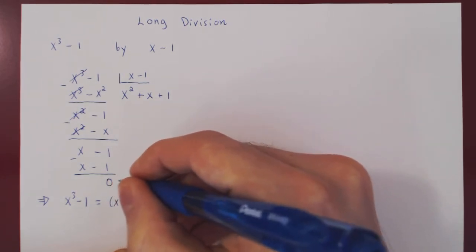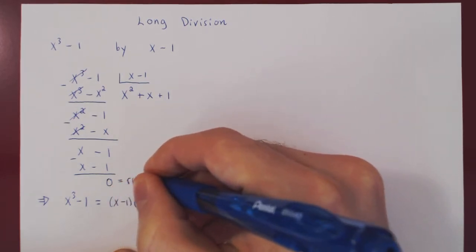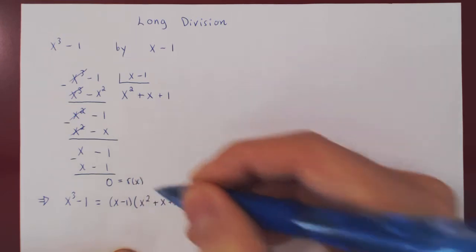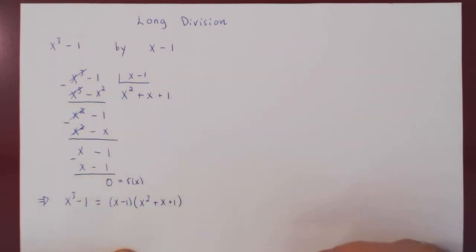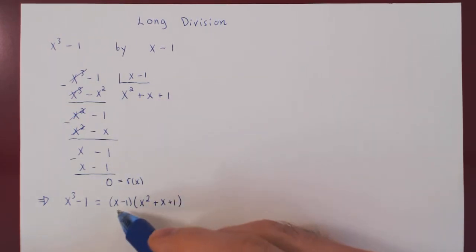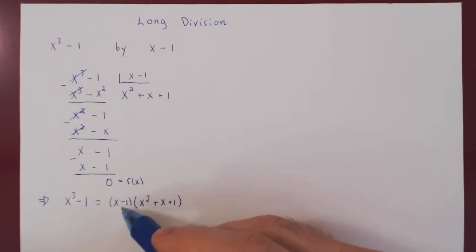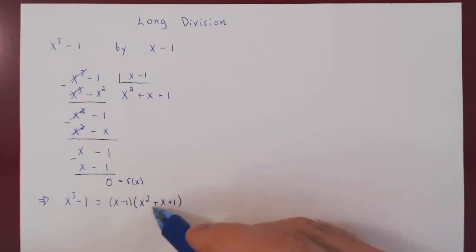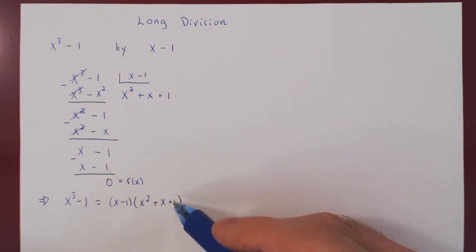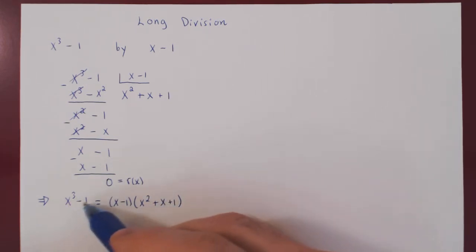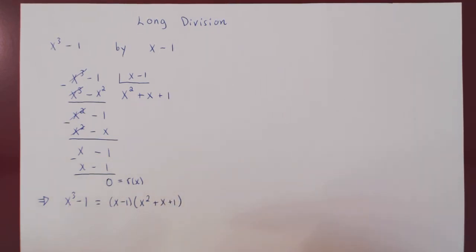Usually we denote this by r(x), the remainder. You can check — it's very easy. Multiply out x minus 1 with x squared plus x plus 1, and you will get x cubed minus 1.